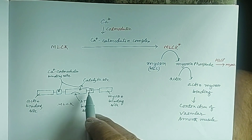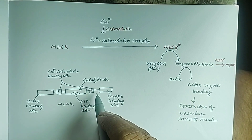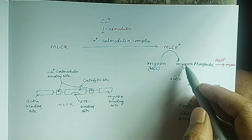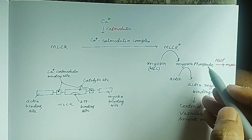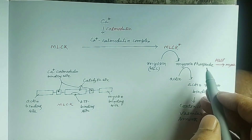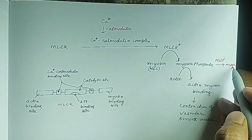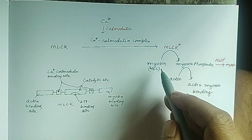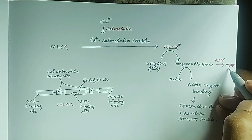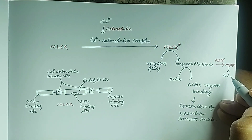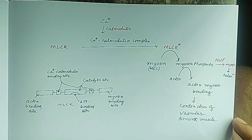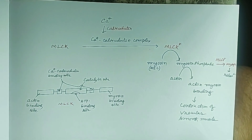If by any means we inhibit the binding of calcium-calmodulin with MLCK, there will be relaxation. Myosin-phosphate is also dephosphorylated back to myosin by myosin light chain phosphatase (MLCP). This dephosphorylation results in relaxation. So when myosin light chain phosphatase is activated, that results in relaxation of the smooth muscle.